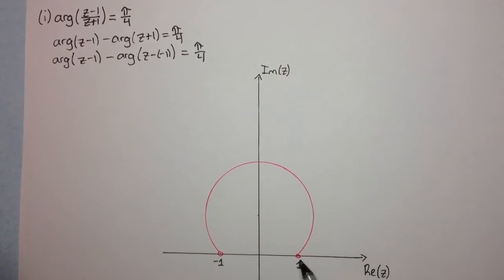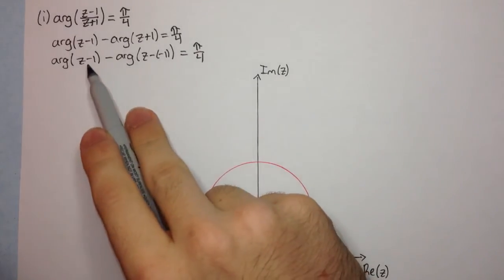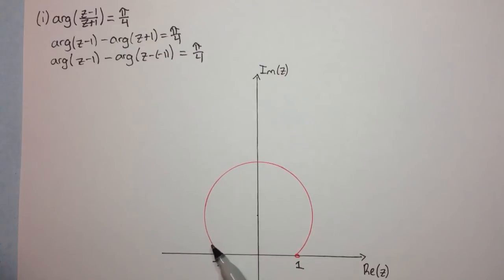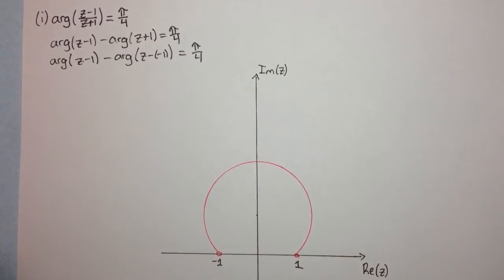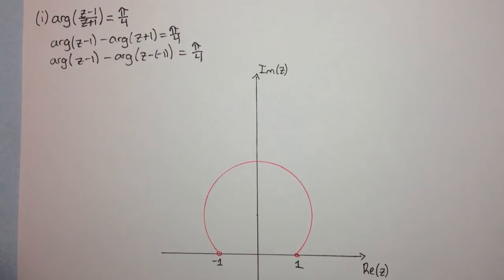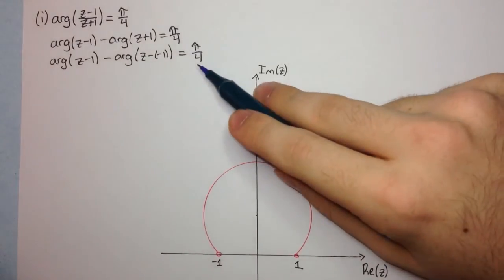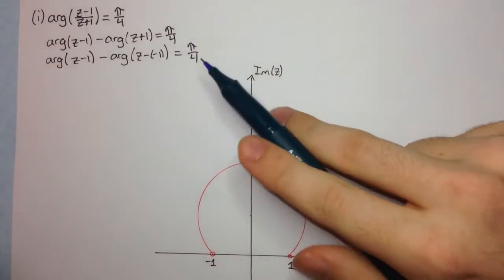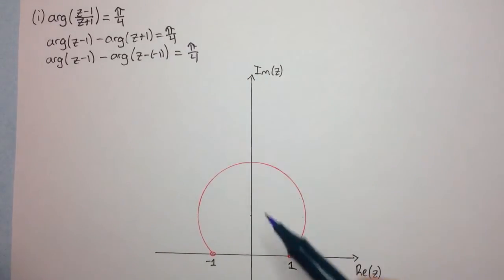This red curve is the locus of z. We're starting at this point, which is 1, corresponding to the complex number 1 plus 0i. We go anti-clockwise until we get to the complex number minus 1 plus 0i. This is a major arc of a circle, and we know it's a major arc because this angle is pi on 4. This angle is the angle that this chord subtends on the circle.